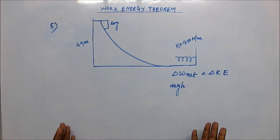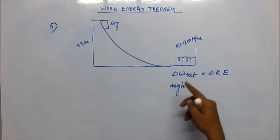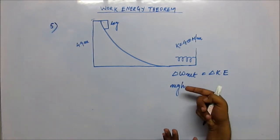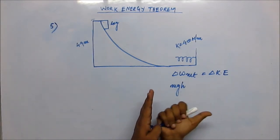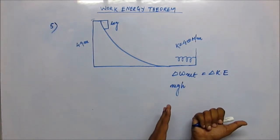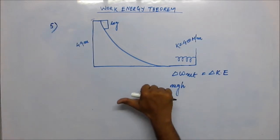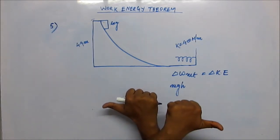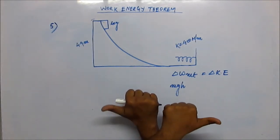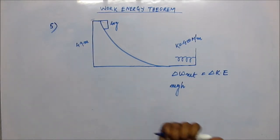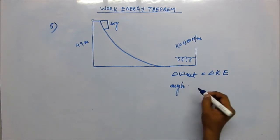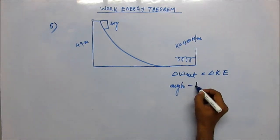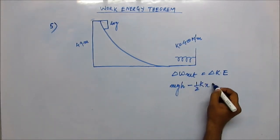Now work done by the spring: the spring will be applying force outward resisting the compression, and the movement of the block would be inward causing the compression. So the force would be towards left and displacement would be towards right. They are in opposite direction, the angle is 180 degrees, so the work would be negative. The work done by the spring is negative half k x squared.